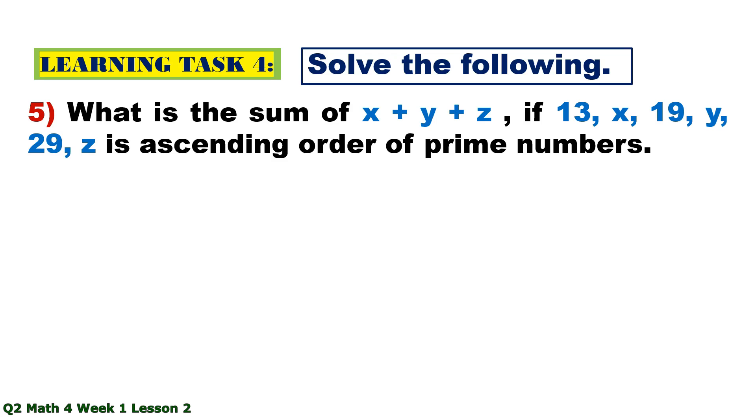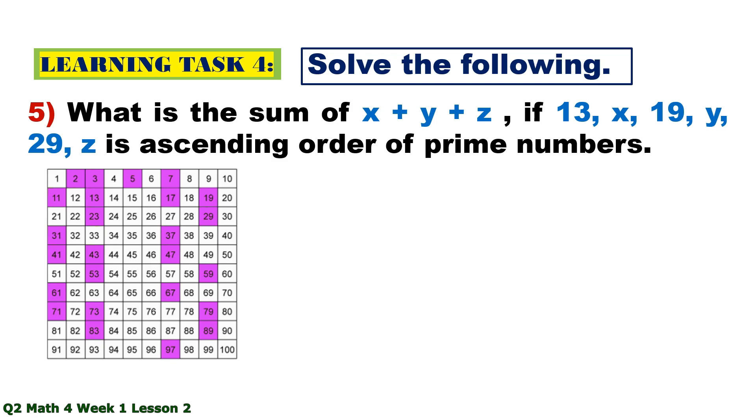Number 5. What is the sum of x plus y plus z if 13, x, 19, y, 29, z is ascending order of prime numbers? Again, 13, x, 19, y, 29, z. The value of x is 17, y is 23, and z is 31. And the sum is 71.